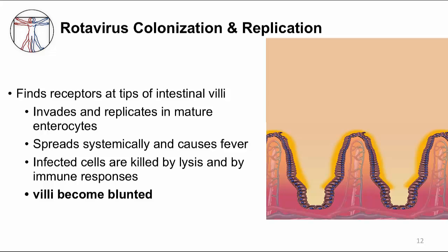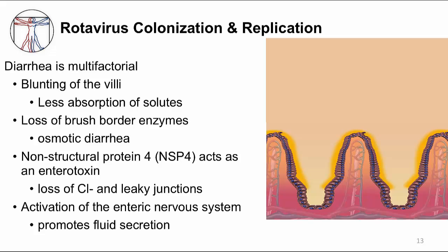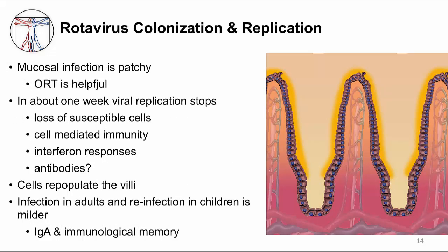Multiple factors cause the diarrhea. Blunting of the villi results from loss of fully differentiated enterocytes, meaning you lose your absorptive cells and are less able to digest and absorb nutrients. The result is osmotic diarrhea due to increased solutes in the intestinal lumen. Another contributing factor: one of the non-structural proteins of rotavirus, NSP4, is thought to act like an enterotoxin — it can induce chloride secretion and perturb tight junctions. Rotavirus infection can also activate the enteric nervous system, increasing peristalsis and promoting fluid secretion. Despite all this, oral rehydration therapy can help patients, likely because the enterocyte injury is patchy.